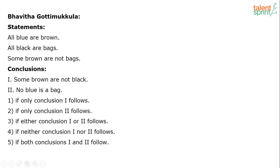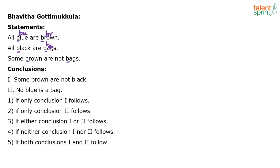The first challenge here is every word starts with B, and that makes it a little difficult when you are drawing the Venn diagram. Every element starts with B — blue, brown, black, bags — all four of them. So let's use the right abbreviations first so that we don't get confused. Blue will be BU, brown is BR, bags is BG, and black is BL.